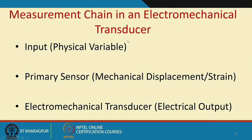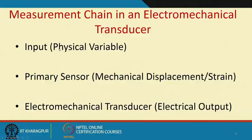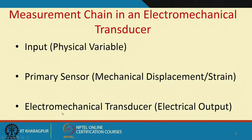Looking at the measurement chain: in any electromechanical transducer I have an input which is my physical variable — this could be voltage, current, vibration, or strain — and then I have a primary sensor. The primary sensor could be a strain gauge or a piezoelectric crystal. In CBM, we are going to talk about transducers where piezoelectric material is the most important sensing element, and then we get a corresponding output from these transducers.